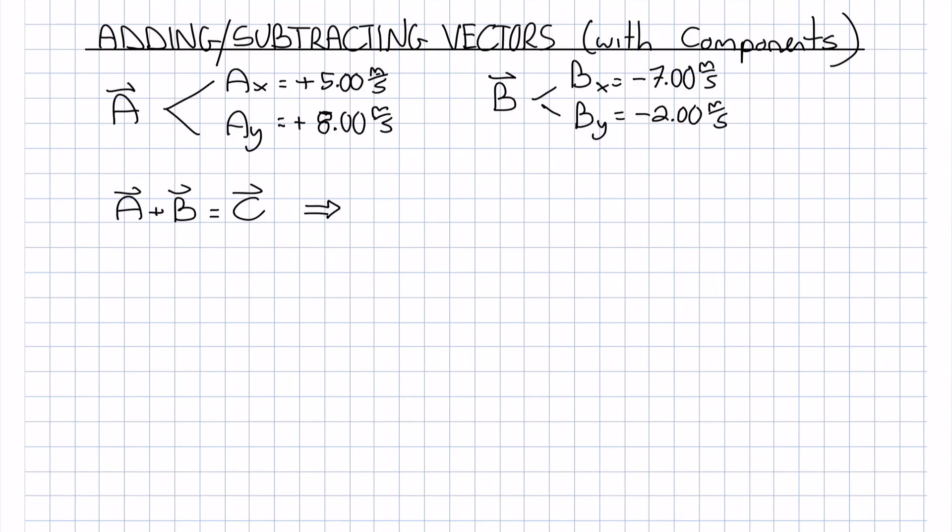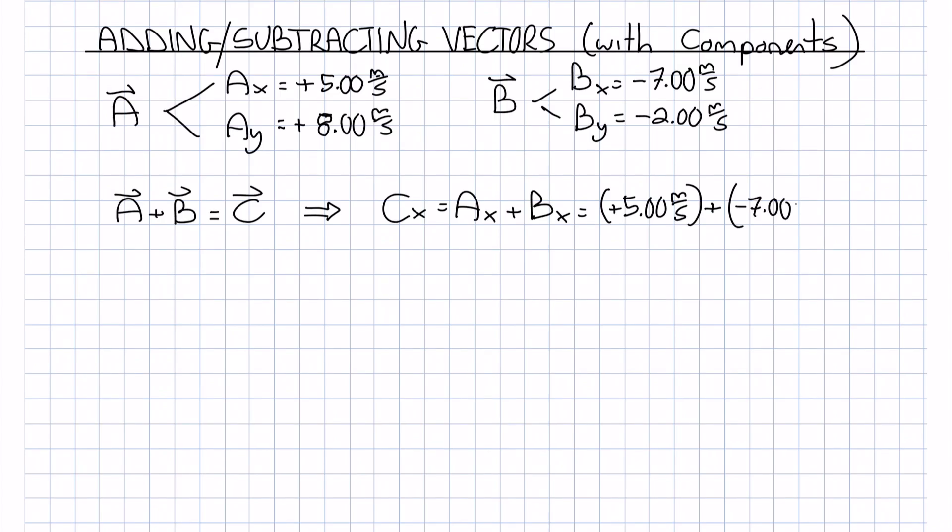So first we'll add the x components together, so Ax plus Bx: plus 5.00 meters per second plus negative 7.00 meters per second gives you a resultant of Cx equals negative 2.00 meters per second.